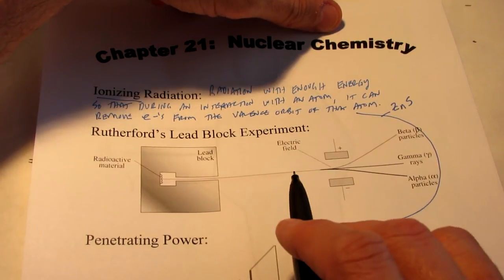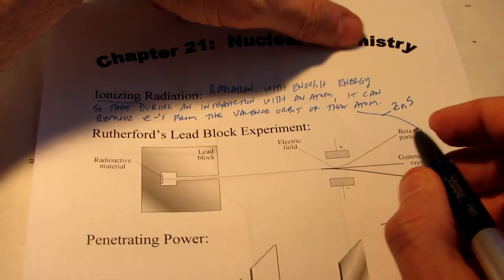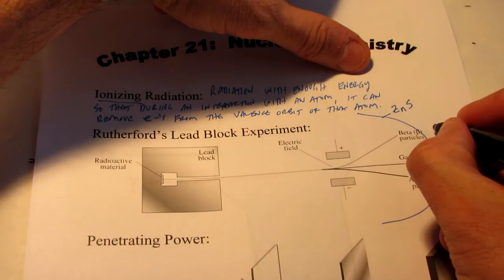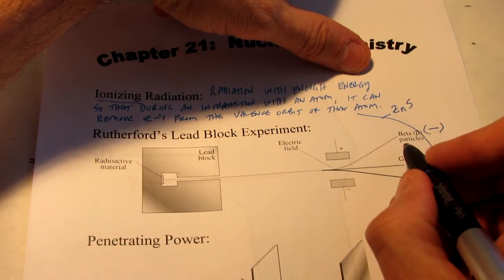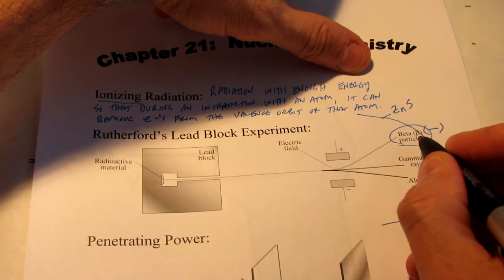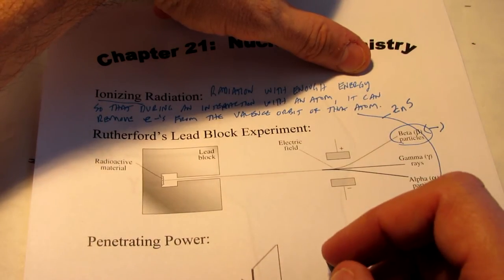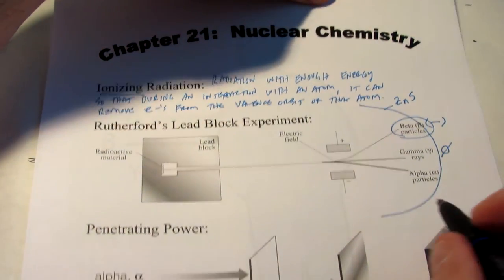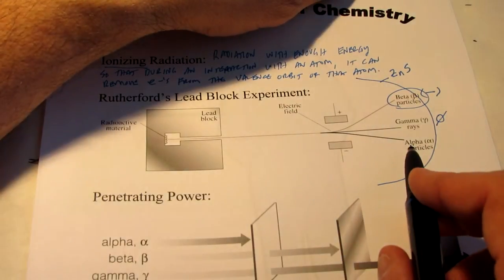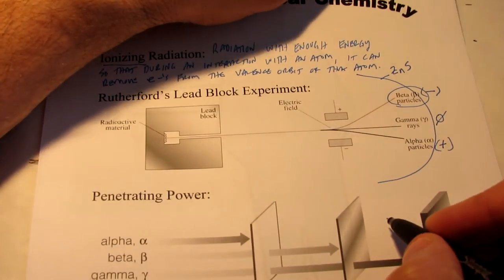Now, as you can see in this diagram, some of the particles were deflected towards the positive pole of the magnet. Now obviously they carried a negative charge, right? Opposites attract. And these are called beta particles. Some went straight through. They were not deflected by the magnetic field. Those were neutrally charged. Those are gamma rays. And some were deflected towards the negative pole. Obviously they carried a positive charge, and they are called alpha particles.